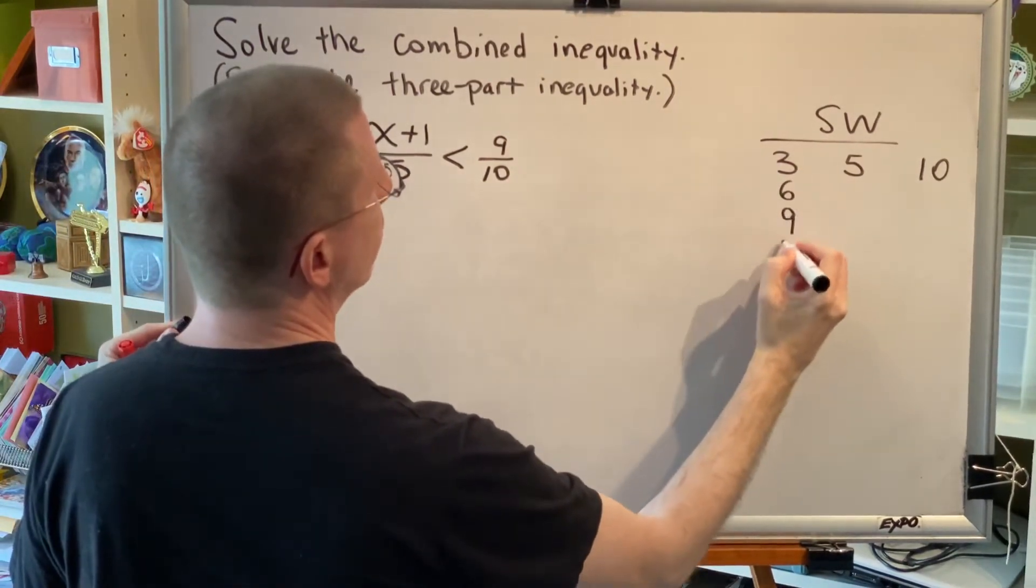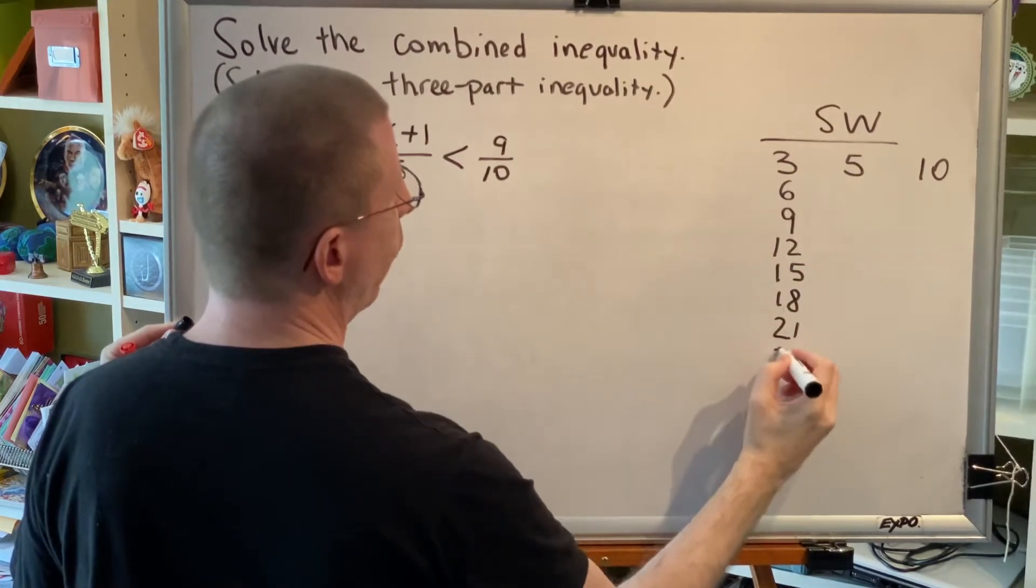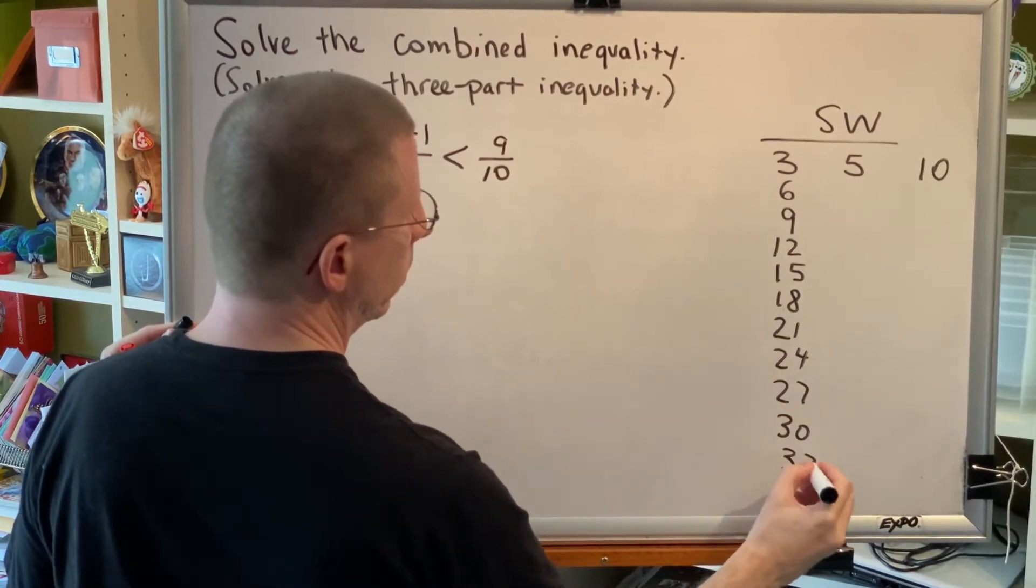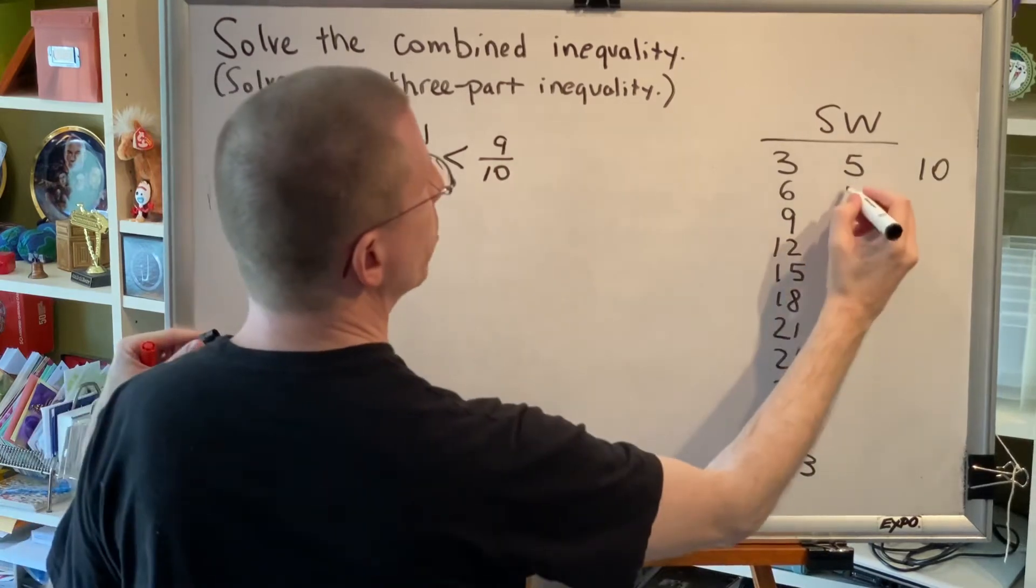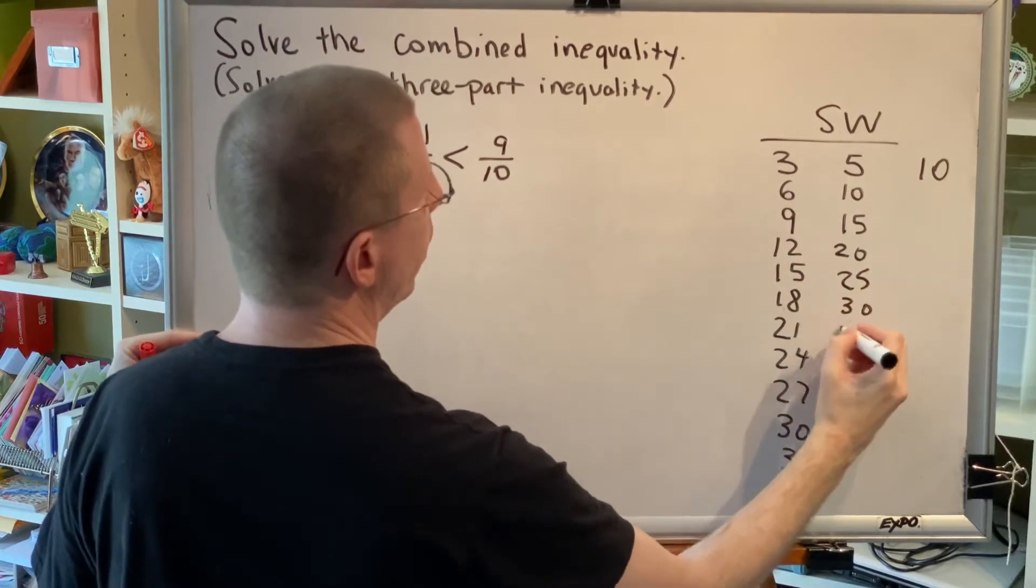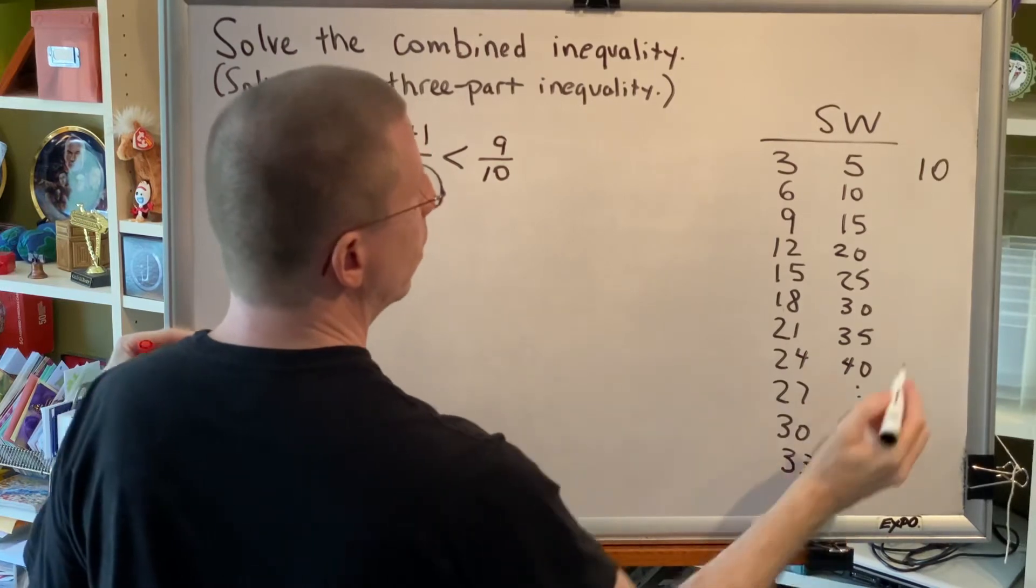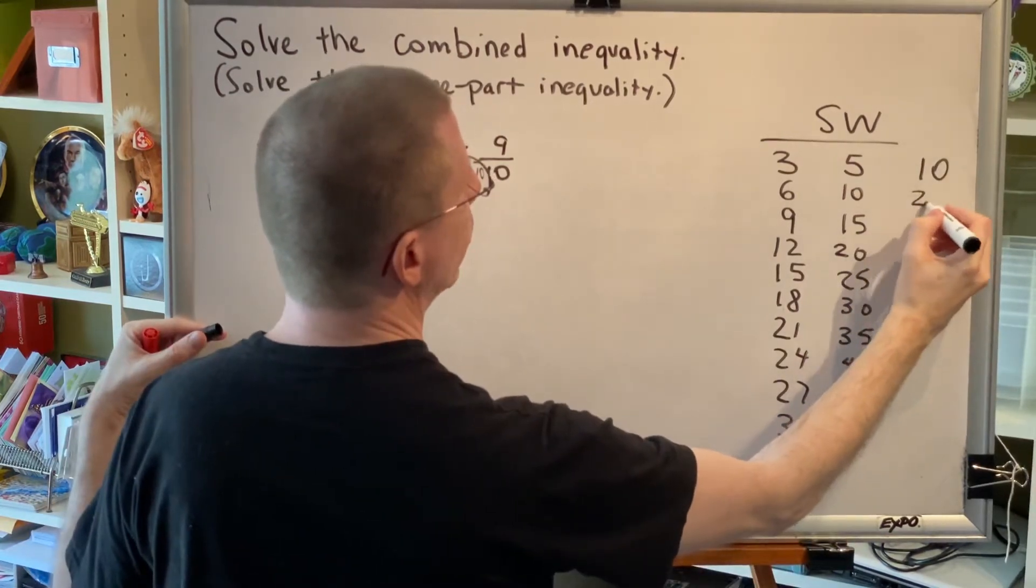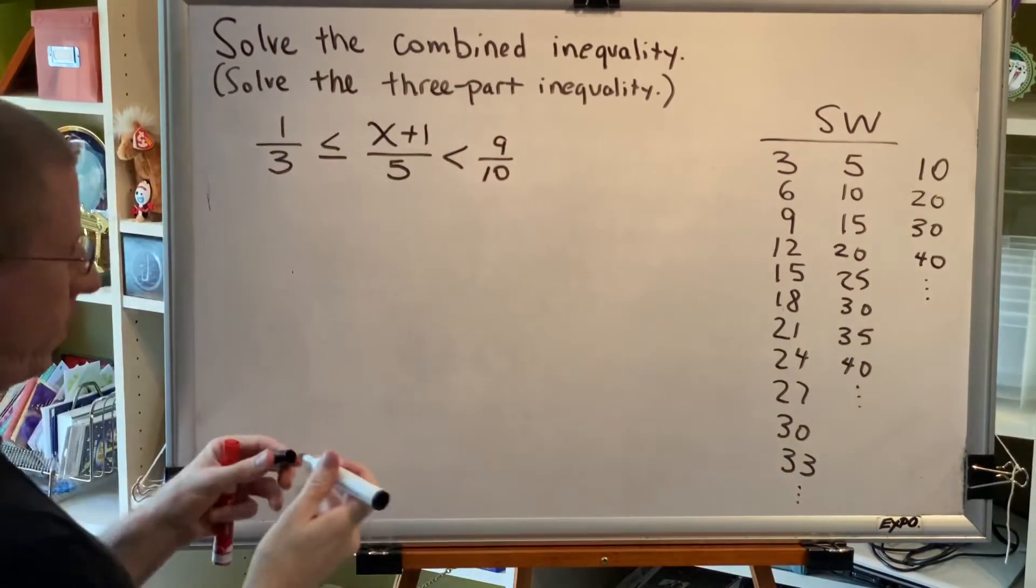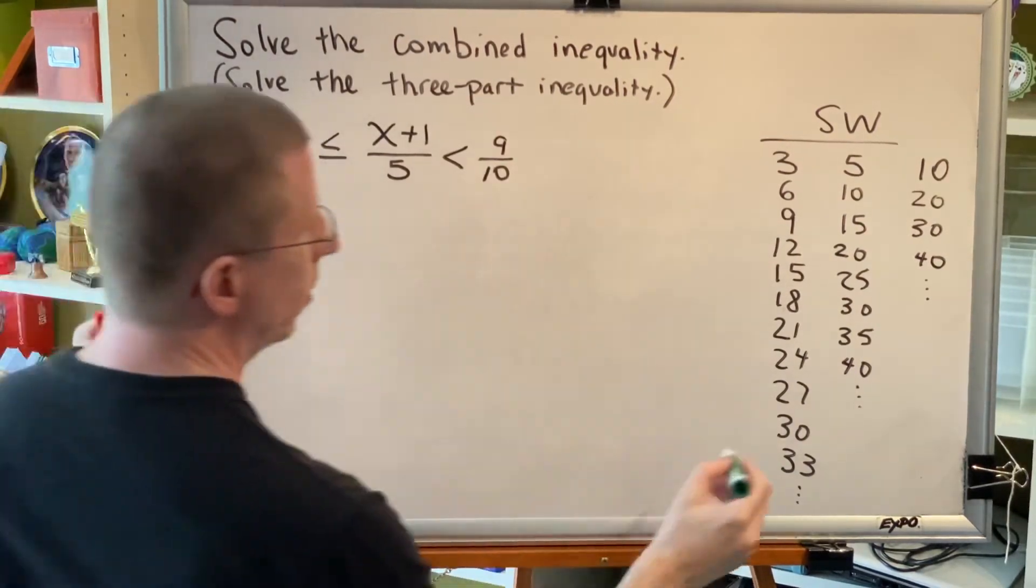3, 6, 9, 12... You'll notice that I'm just adding 3 over and over again. Next, the multiples of 5: 5, 10, 15, 20, 25, 30, 35, 40. Next, the multiples of 10: 10, 20, 30, 40. I'm looking for the smallest number that appears in all three columns. That would be 30.